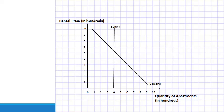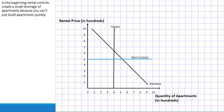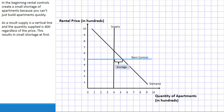In the short run, supply is vertical because you can't just build apartments quickly — it's not like you can build apartments overnight. Rent controls create a small initial shortage of apartments. The quantity supplied is 400 regardless of price, resulting in a small shortage at first. Inefficiency develops not in the short run but over the long run — rent controls have a significant effect on the shortage over the long term of their usage rather than immediately.